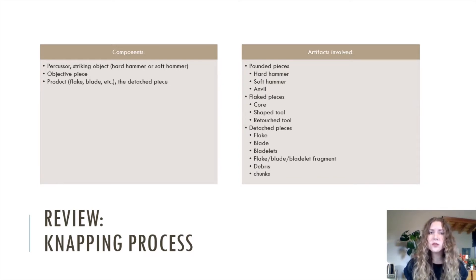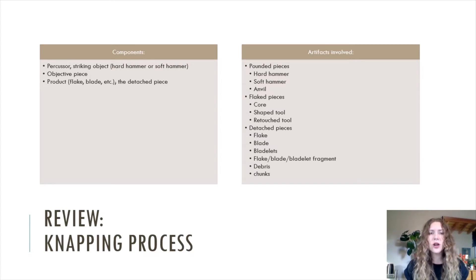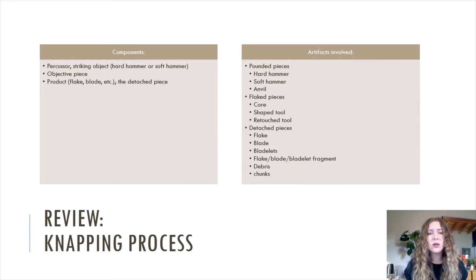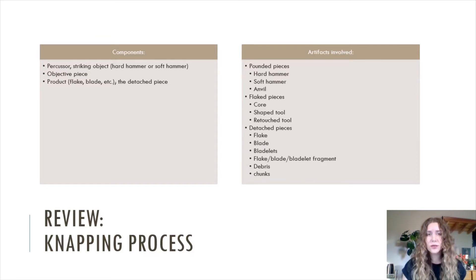The flaked pieces would be the pieces being worked from — the objective pieces, like cores or shaped tools, also including retouched tools. And then there are the detached pieces, which are flakes, bladelets, debitage, flake blade and bladelet fragments, debris, and chunks.